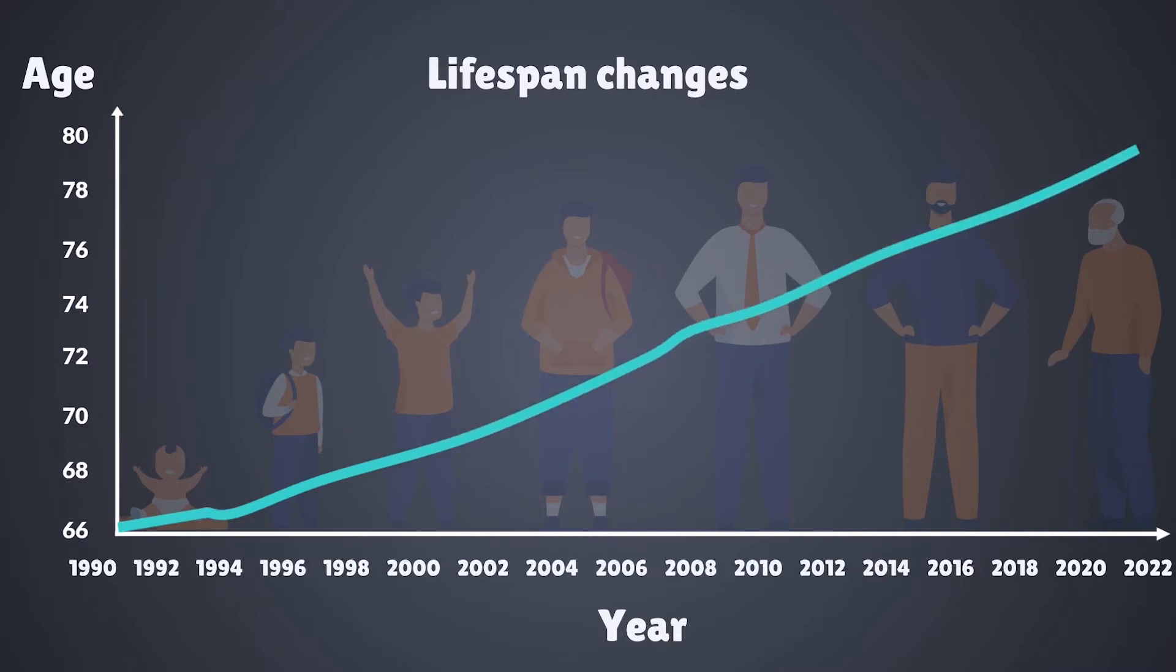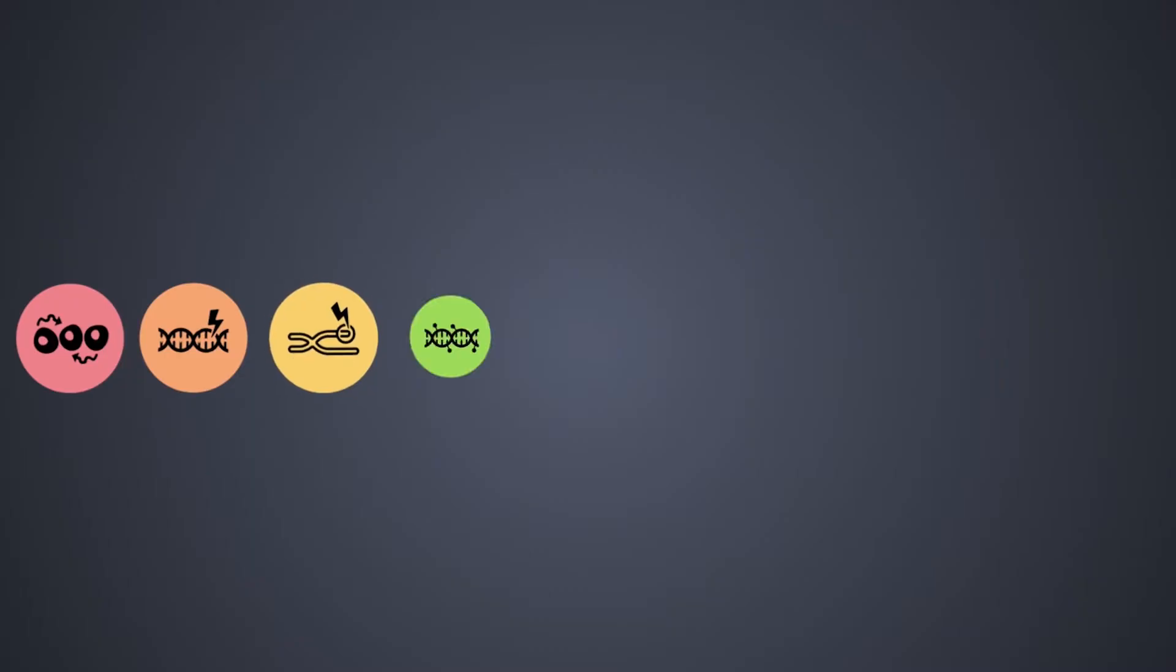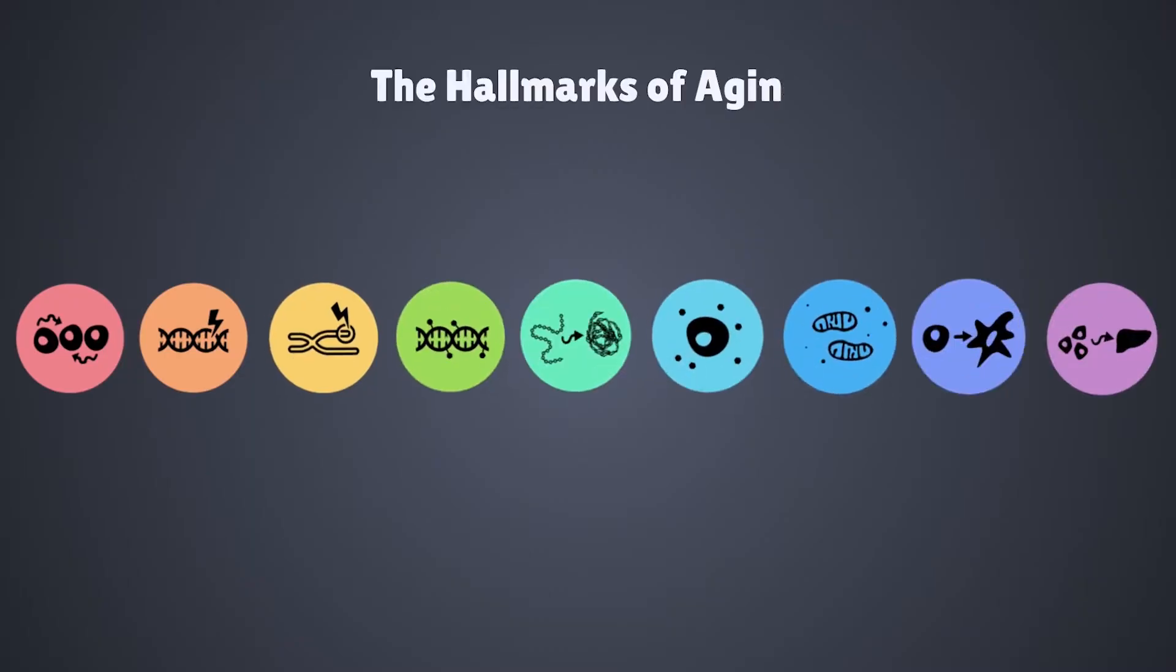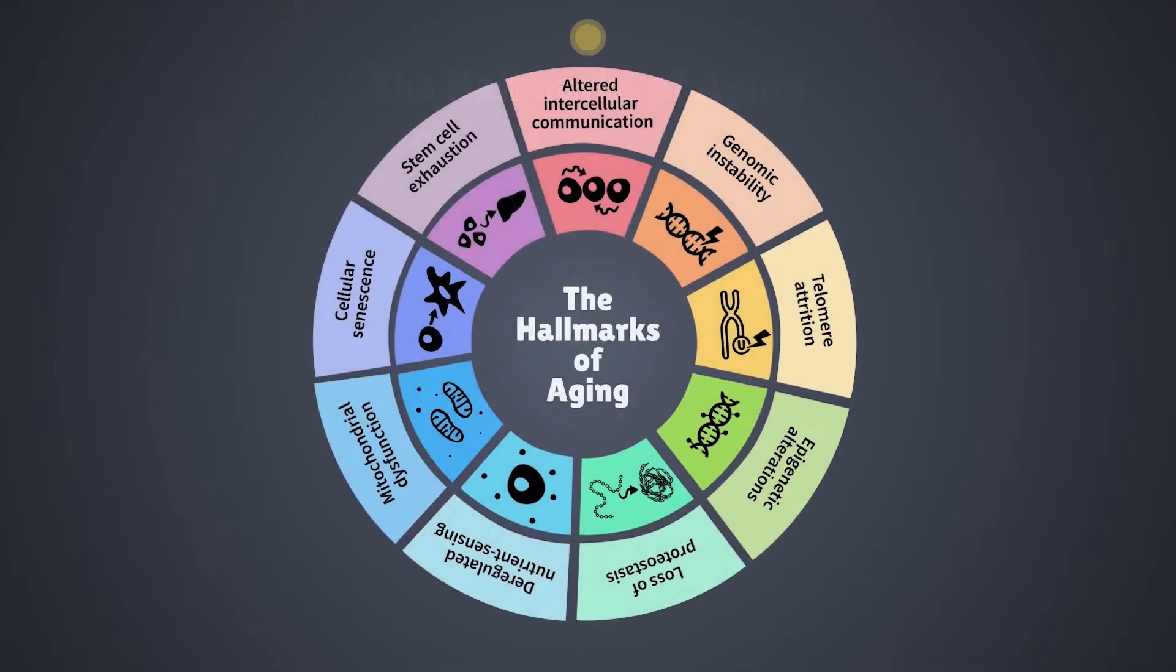With individuals living longer and longer, aging research has become a huge field of study. More recently, scientists have discovered nine traits that are hallmarks of aging: from altered intercellular communication, deregulated nutrient sensing, stem cell exhaustion, cellular senescence, mitochondrial dysfunction, loss of proteostasis, telomere attrition, epigenetic alterations, and finally genomic instability, which is one of the major players leading to cancer.